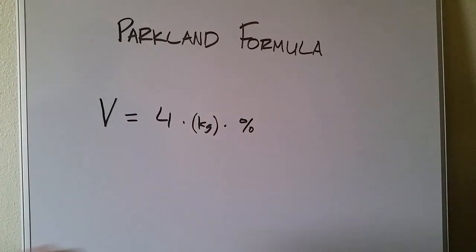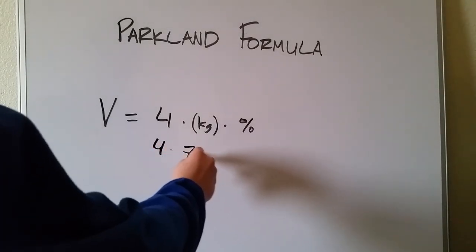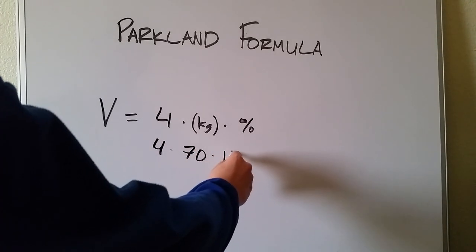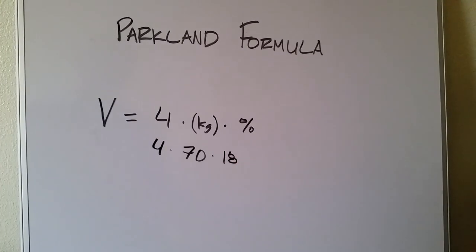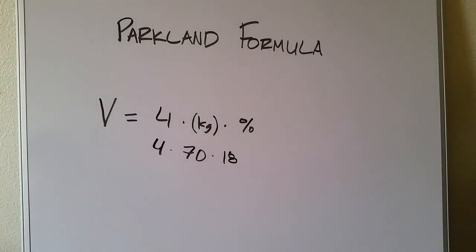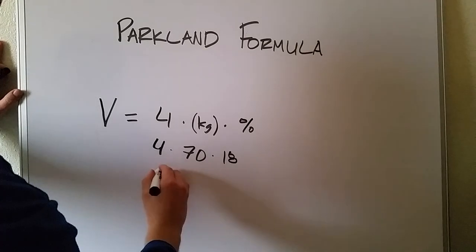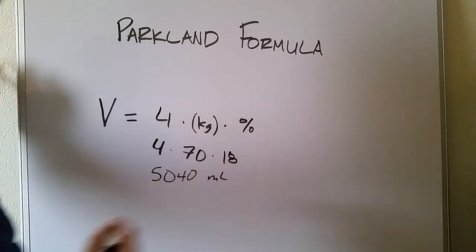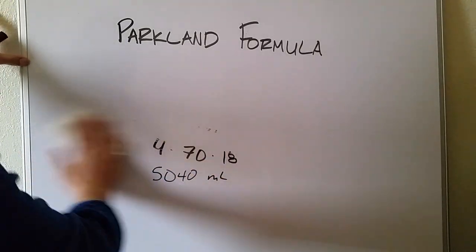So let's say we have a 70-kilogram patient — which used to be the normal in America — and they have 18% burns because they stuck both of their arms into a molten pot of steel or something and burned both arms. You multiply this out to get the volume in milliliters that needs to be replaced, and that equals 5,040 milliliters.